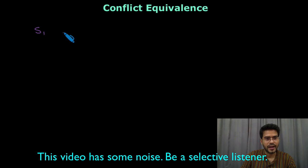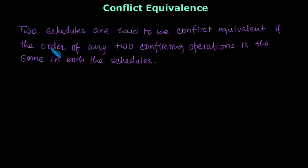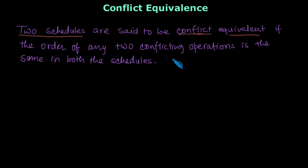Two schedules S1 and S2 are called conflict equivalent when they have the same order of conflicting operations. When comparing two schedules, they are said to be conflict equivalent if the order of any two conflicting operations is the same in both schedules.